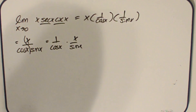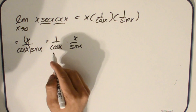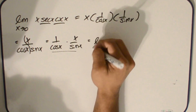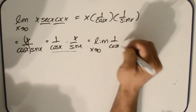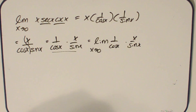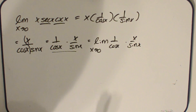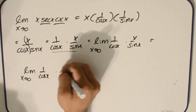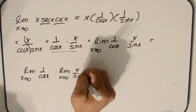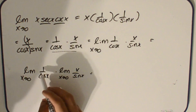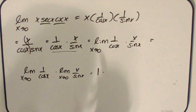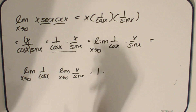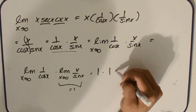We split up the denominator, separating cosine x and sine x, creating two functions: 1 over cosine x times x over sine x. Now we can take their limits separately: the limit as x approaches 0 of 1 over cosine x, times the limit as x approaches 0 of x over sine x. Cosine 0 equals 1, so the first limit is 1 over 1, which is 1. And from our key fact, the limit of u over sine u as u approaches 0 equals 1. So our final answer is 1 times 1, which equals 1.